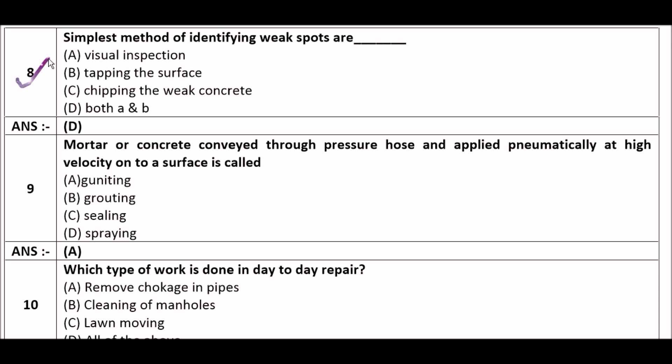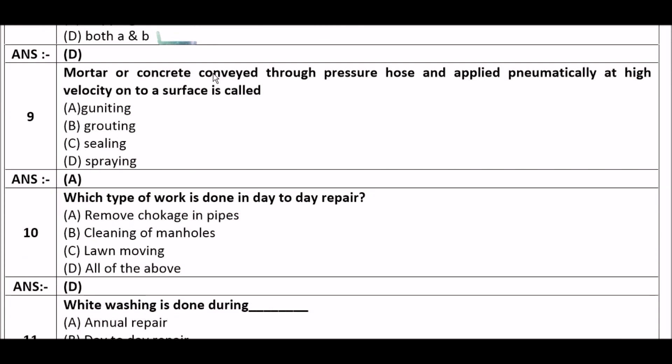Question 8: The simplest methods of identifying weak spots are — option A: visual inspection, option B: tapping the surface, option C: chipping the weak concrete, option D: both A and B. The right answer is option D — both A and B. Visual inspection and tapping the surface are the simplest methods for identifying weak spots.